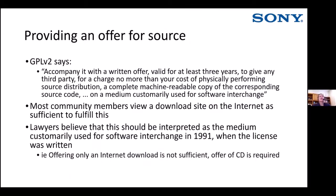The other solution is to provide a written offer for source instead of the source itself. The GPL wording is: 'accompany it with a written offer valid for at least three years to give any third party, for a charge no more than your cost of physically performing source distribution, a complete machine-readable copy of the corresponding source code on a medium customarily used for software interchange.' Most community members feel an internet download site is sufficient, but most lawyers believe that phrase should be interpreted as the medium used for software interchange in 1999 when the license was written — so offering only on the internet is not sufficient. An offer of a CD or similar physical medium is required.